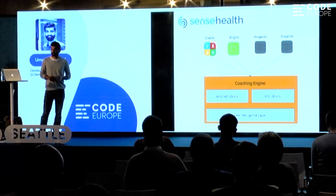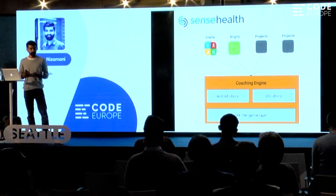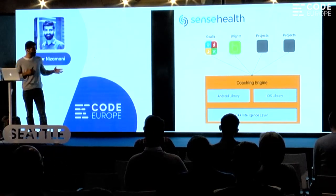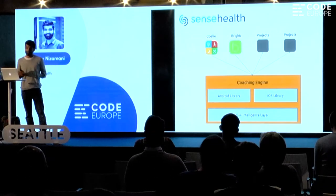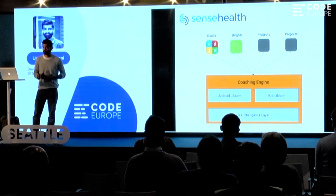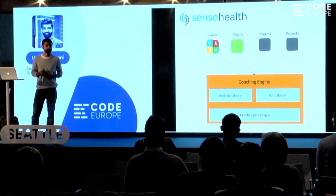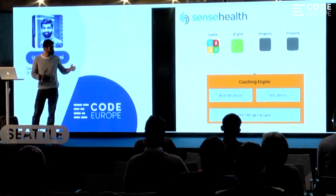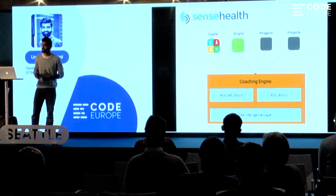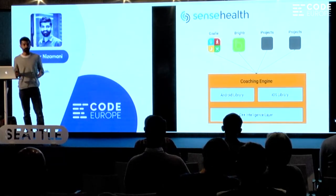From a technology perspective, this is how our stack looks right now. We have a coaching engine — the holy grail of our monitoring and machine learning algorithms. We have libraries on Android and iOS which are responsible for sensing, using your phone's raw sensor data to figure out how much you move and if you sleep well enough. Our intelligence and all machine learning code is written in C++, which is used by both platforms and across all of our products.